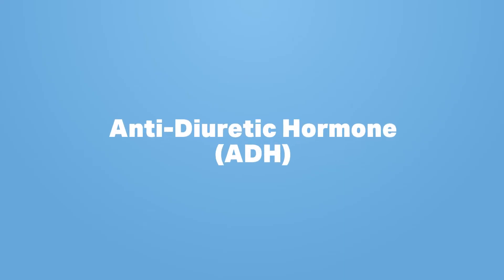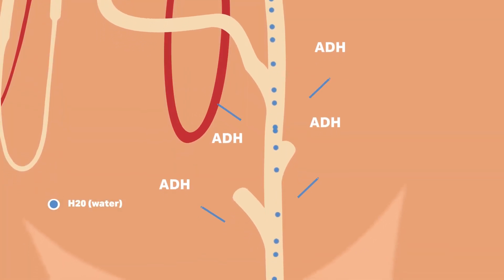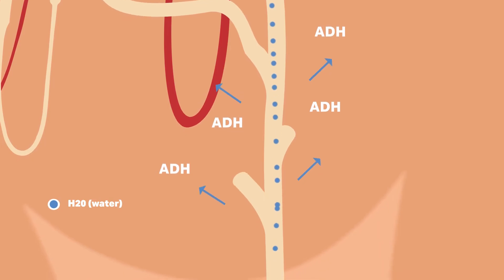The amount of water reabsorbed in our kidney nephrons is controlled by antidiuretic hormone, or ADH. ADH makes the collecting ducts of the nephrons more permeable so that more water is reabsorbed into the blood.